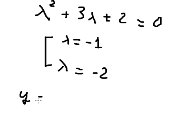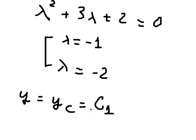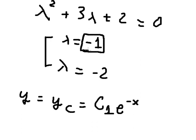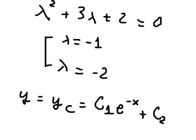Now we have y equals to yc, which is c₁ times e to the power of negative x — substituting lambda equals negative one — plus c₂ times e to the power of negative two x. This is the final answer.